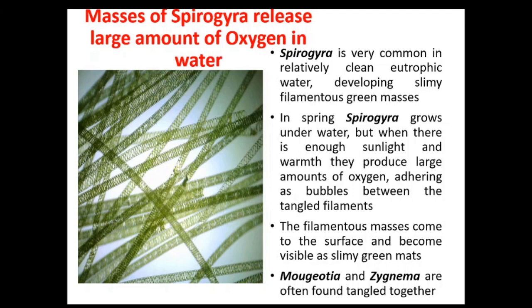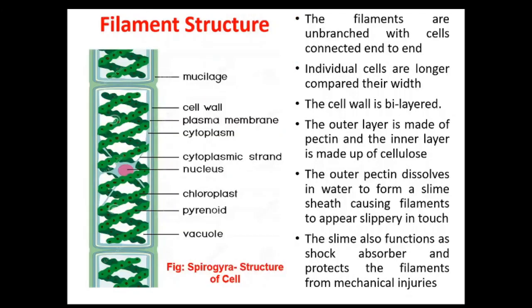The two other algae, Mougeotia and Zygnema, are also often found tangled with the masses of Spirogyra. Now, the detailed structure of the Spirogyra filament: the filaments are unbranched with cells connected end to end. Individual cells are longer compared to their width. In this magnified view of the filament, you can see the long unbranched filament of Spirogyra with cells that are longer in length compared to their width.